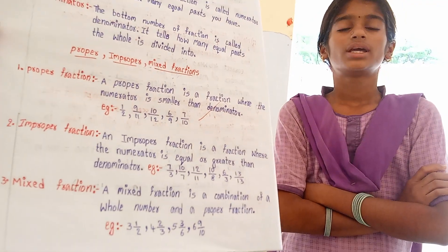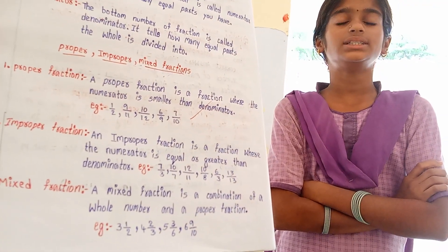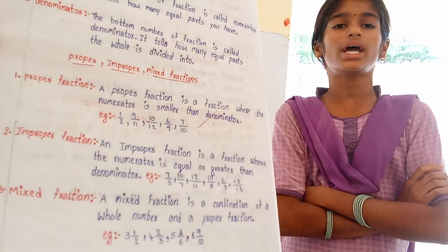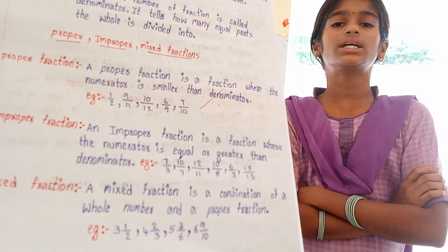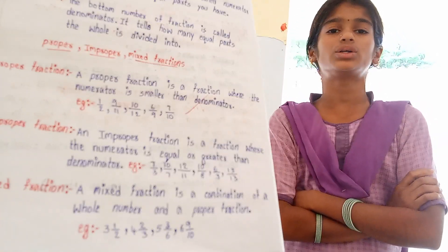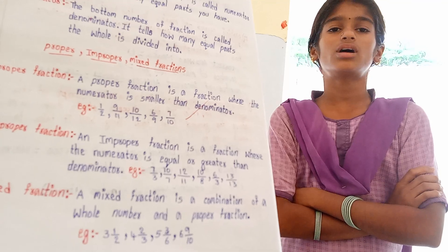Define the mixed fraction. A mixed fraction is a combination of a whole number and a proper fraction. Example: 3 1/2, 4 3/4.